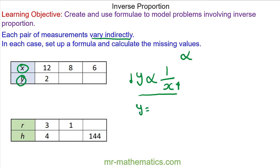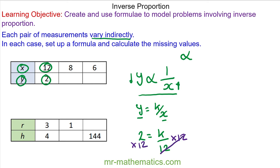We need to use the constant of proportionality k to model this relationship. We have a value of y and x when y is 2 and x is 12. So y, which is 2, is equal to k divided by x, which is 12. By multiplying both sides by 12 we can find that k is equal to 2 times 12, which is 24. So our model, substituting this value of k into the formula, is y is equal to 24 divided by x, and this describes the variation.